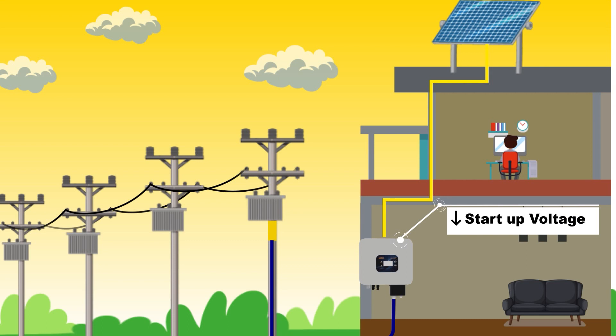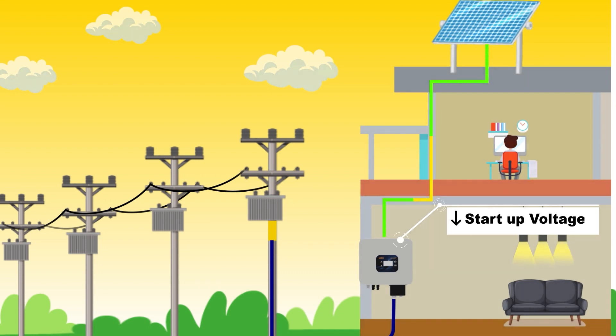The start-up voltage of an ideal inverter should be less, so that it could start power harvesting from solar panels early in the day.